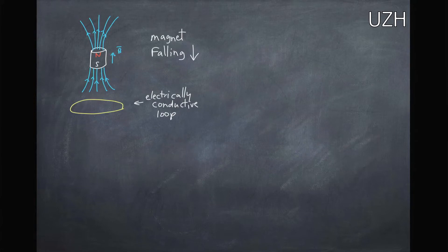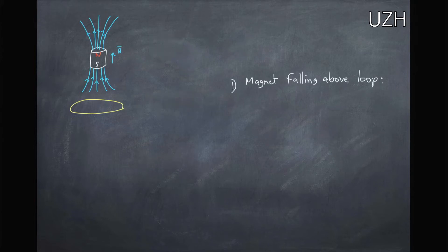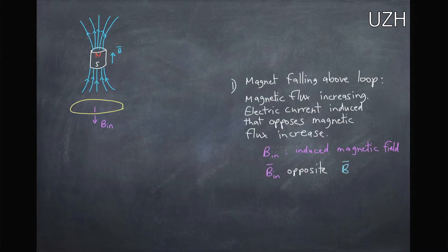Now if we were to drop this magnet through an electrically conductive loop, then what would happen? Well, let's consider it above the loop first. As the magnet falls through the loop, the amount of magnetic field inside this loop will be increasing.